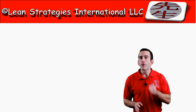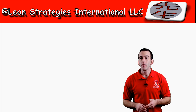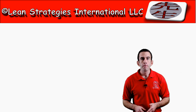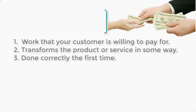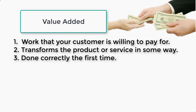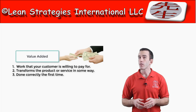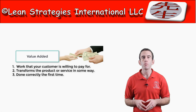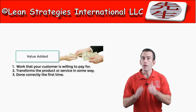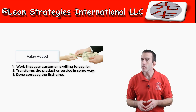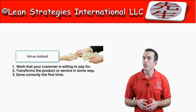Let's get started by first discussing the 3 types of work that take place in every organization. The first type is called value-added work — the actual work that a customer is willing to pay for. We can also describe it as activities that transform a product or service from one condition to another, only if the customer is willing to pay for it, and the transformation is performed correctly the first time through. If these three qualities are present, it is a value-added activity.